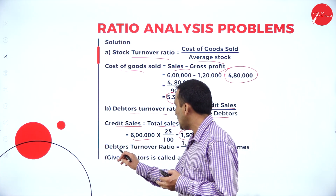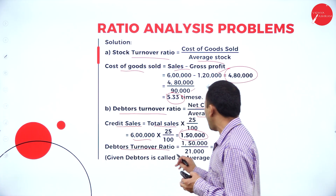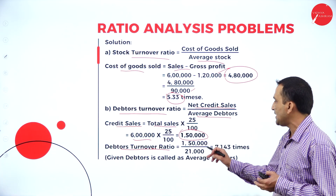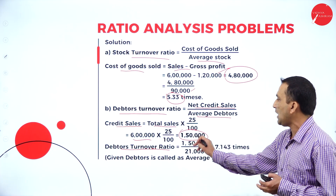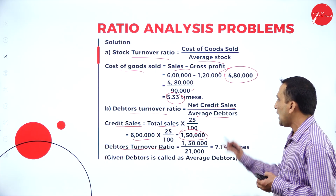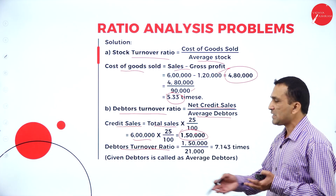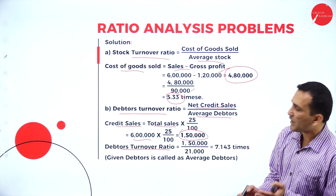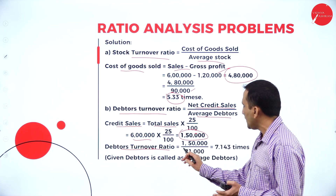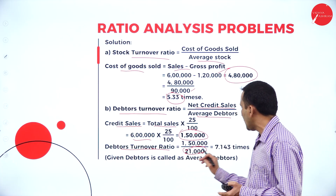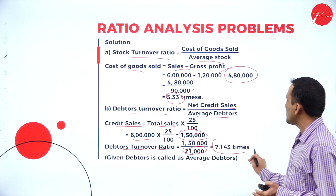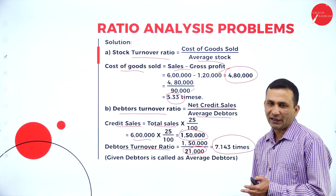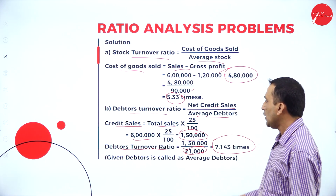Using the debtor turnover formula: net credit sales 1,50,000 divided by average debtors. Debtors given in the balance sheet current assets is 21,000. Simplifying: 7.143.